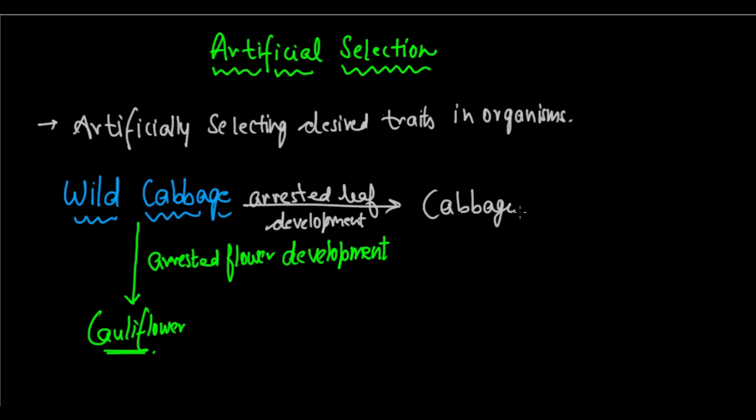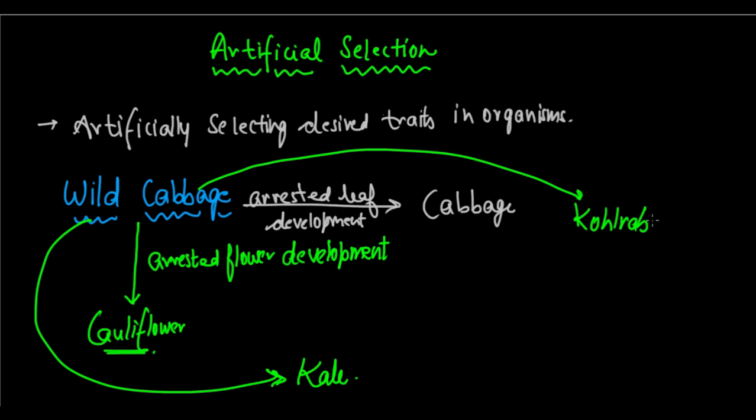Then, we developed two more kinds of wild cabbage. One was kale, another is kohlrabi. Again, through genetic modifications and through artificial selection, we wanted particular needs for the market, and accordingly, specific traits were introduced, and hence kale and kohlrabi were also developed.